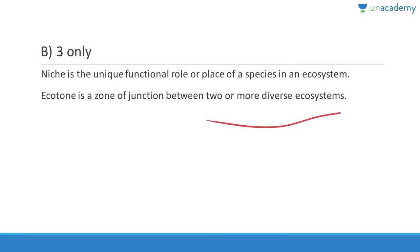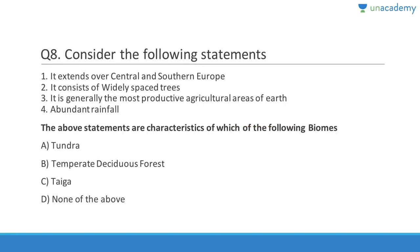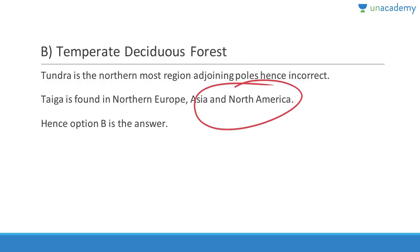Question eight: It extends over central and southern Europe, consists of widely spaced trees, and is generally the most productive agricultural area of Earth. It has abundant rainfall, so it cannot be tundra or taiga. The answer is B — temperate deciduous forests. Tundra is the northernmost region adjoining the poles, and taiga is found in northern Europe, Asia, and North America, so option B fits all the criteria.